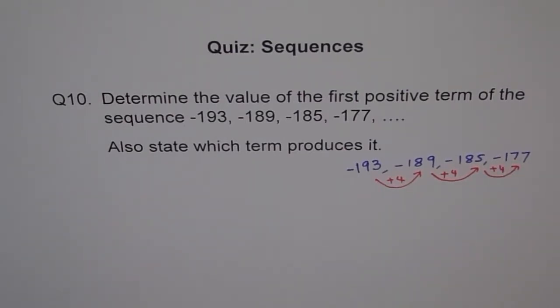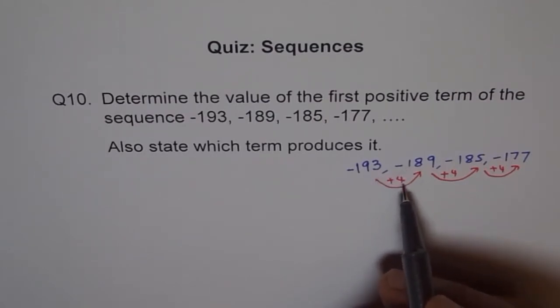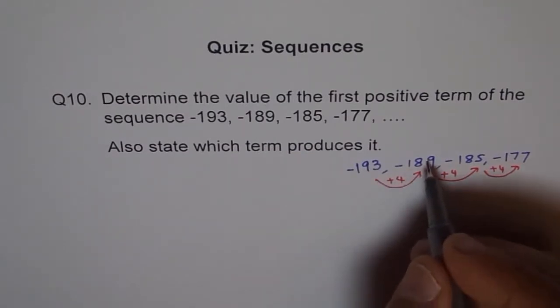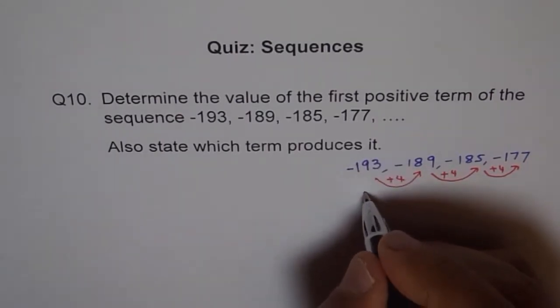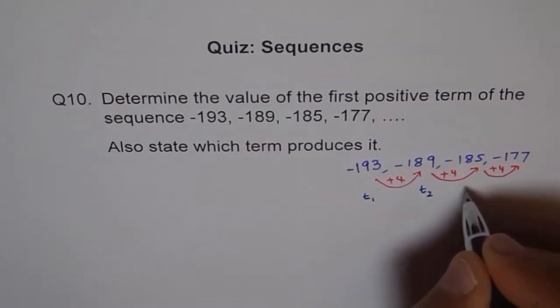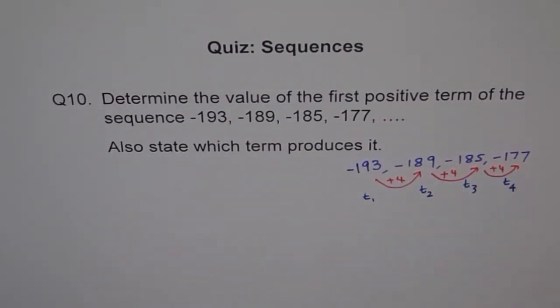Now, to get it positive, you should add at least 193. And those will be multiples of 4 which you add. You are adding 1 times 4. So when you add this here, let's first write down the term numbers. So this is term number T1. This is term number T2, this is term number T3, T4 and like this.